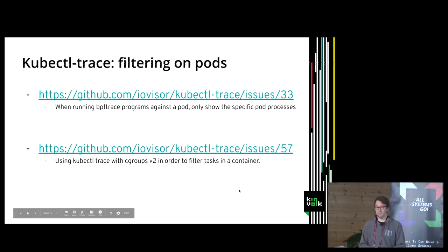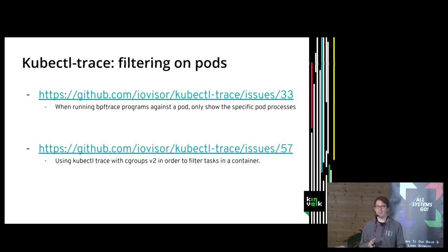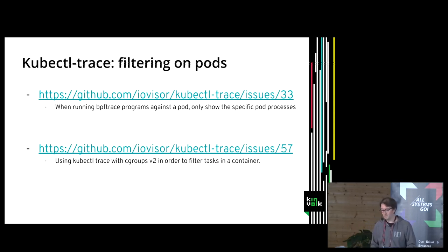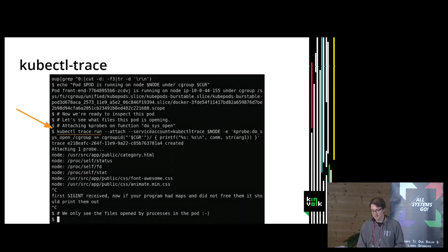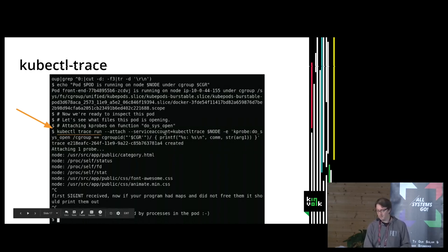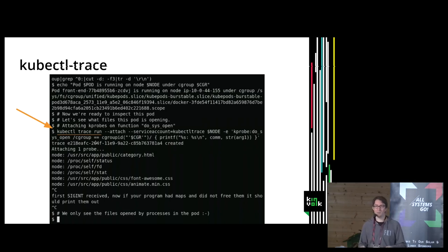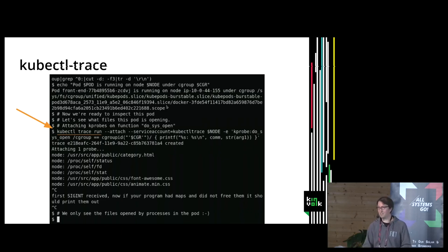There are a couple of things a bit missing in kubectl-trace. It is not so easy to filter the trace on a specific pod, because BPFtrace was more designed to run on a single system where you filter on a PID. At the Kubernetes level, we do not want users to have to check which PID is running. In a demo a few months ago, I was able to filter on a specific pod by specifying the cgroup ID, but that is not a practical user interface yet.